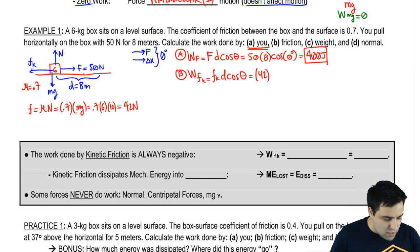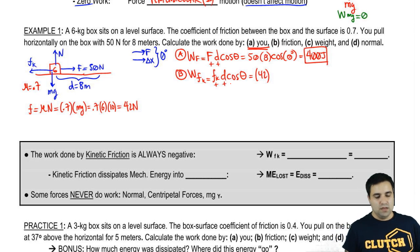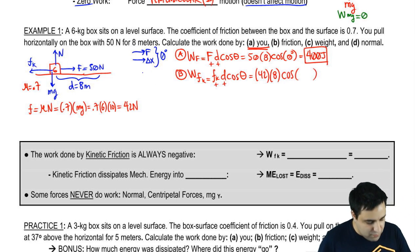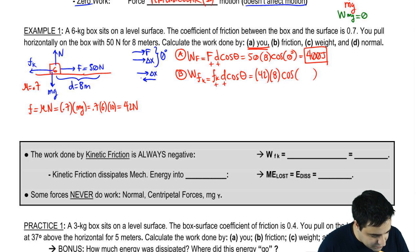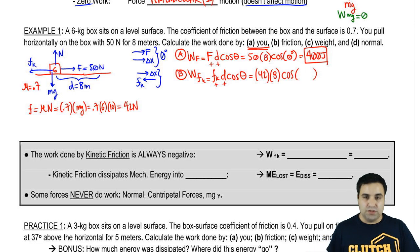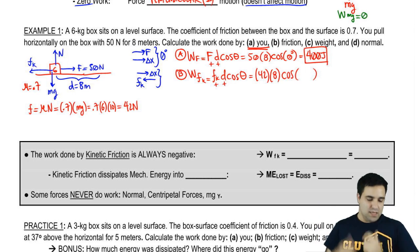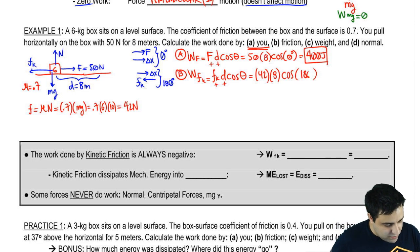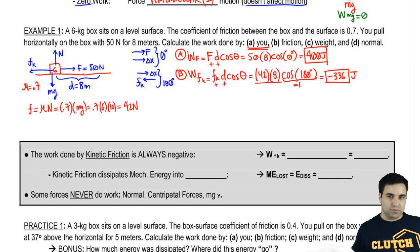So friction is 42. Notice how you don't plug in friction as a negative. These forces always get plugged into the equation as a positive, even if the force is going against you. The distance is 8, and cosine of theta. Now here we have to be careful, because you're moving to the right but friction is going to the left. The angle between these two, when you have two things in opposite directions, the angle between those two is 180 degrees. And if you do the cosine of 180 in the calculator, it's not 1, it's negative 1, which means that this is negative. So negative 336 joules.